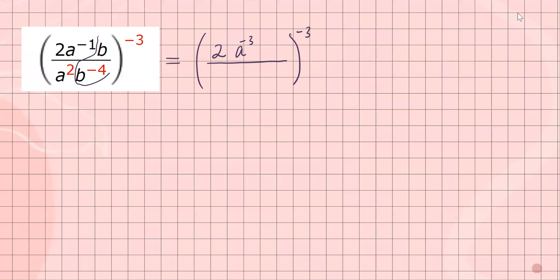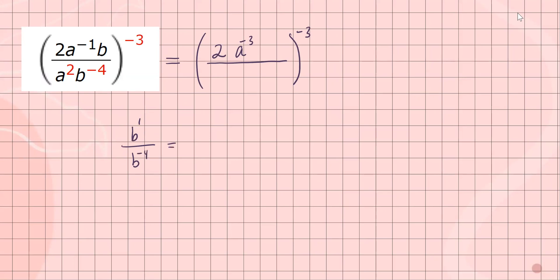Now for the b terms — they're dividing, so subtract exponents again. We have b to the one over b to the negative four. Subtracting: b to the one minus negative four, which is b to the fifth, because negative negative is positive. On the bottom there's nothing, so just one. I've combined all common bases inside, and now everything is raised to a negative third power outside.